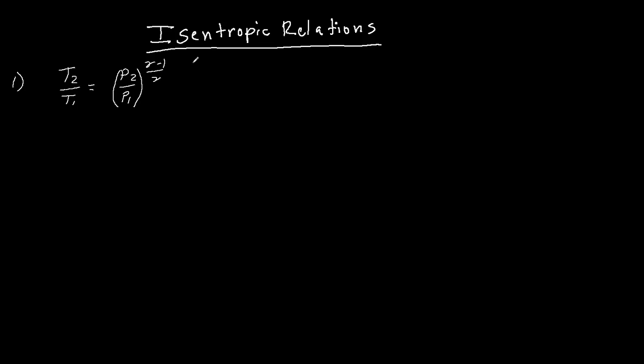Now gamma is our K in this case. You may know it from chemistry or some physics as K, which is the ratio of specific heats, which is Cp over Cv. I'm not going to get into Cp over Cv and what that is and what that means and all the chemistry behind that, but that is what it is.